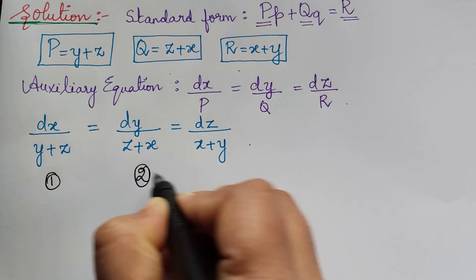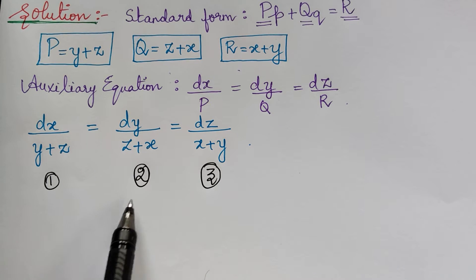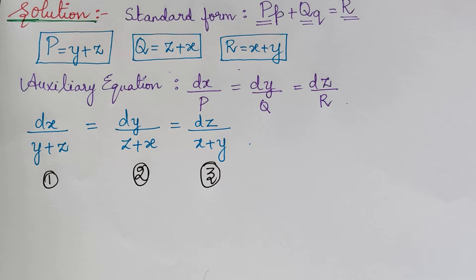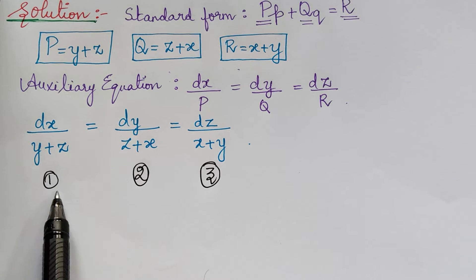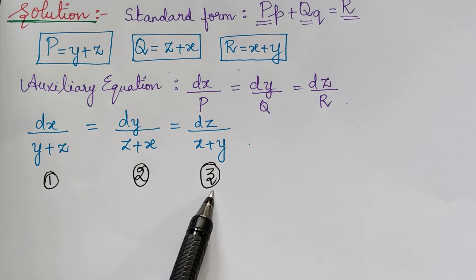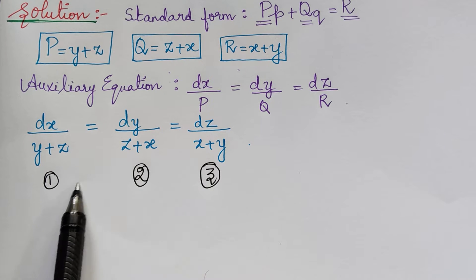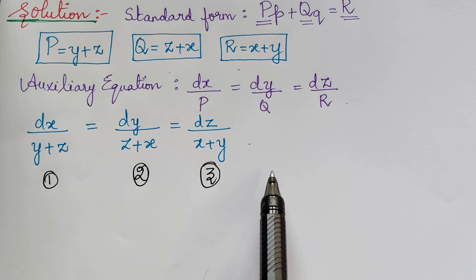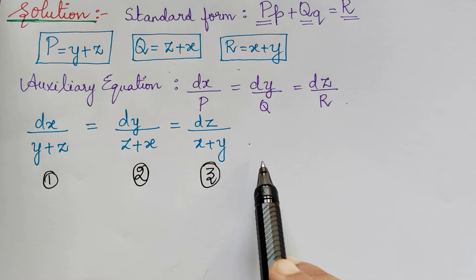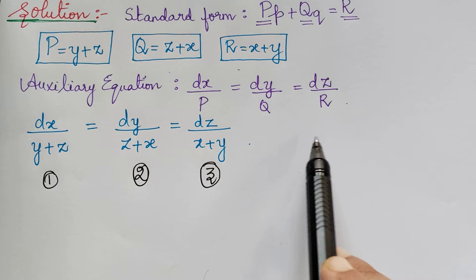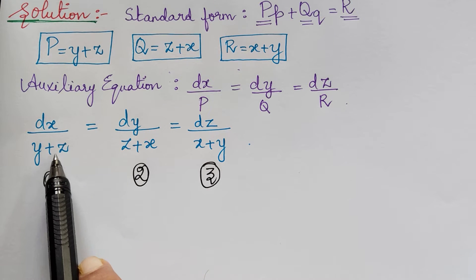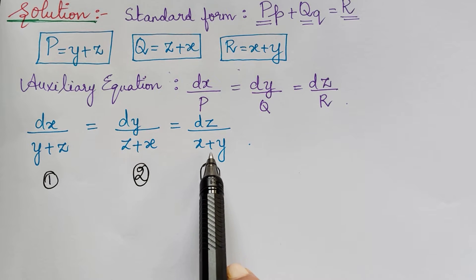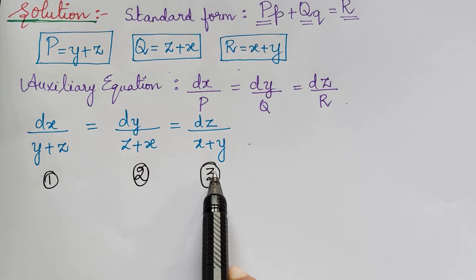Let us mark these ratios as 1, 2, and 3. Now we check whether we can apply the method of grouping or multipliers. Comparing these three equations, we cannot separate them by the variable separable method, so the method of grouping cannot be applied. If we perform operations, we cannot make the denominator zero — since the denominators are y plus z, z plus x, and x plus y — so the method of multipliers cannot be directly adopted either.